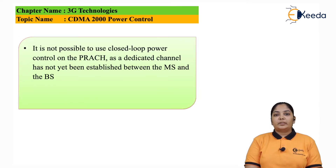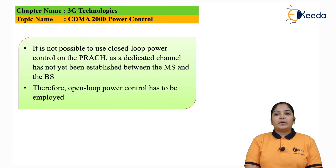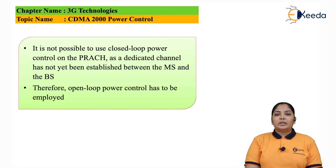It is not possible to use a closed loop power control system on a PRACH, which stands for Physical Random Access Channel, as the dedicated channel has not yet been established between the mobile station and the base station. Therefore, open loop power control has been employed here. The mobile station measures the average received power of the CCPCH, that is the Common Control Physical Channel, over some time to average out the small scale fading effect. This is done because due to frequency duplex, small scale fading on the uplink is unrelated to the fading on the downlink. In other words, it is not possible to determine from the instantaneous power on the downlink the actual level of the instantaneous received power on the uplink. The average received power allows estimation of just the necessary power required for the uplink.